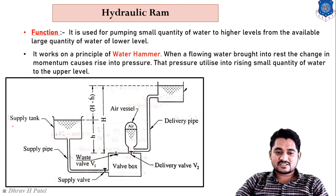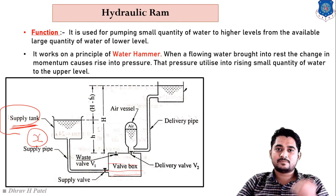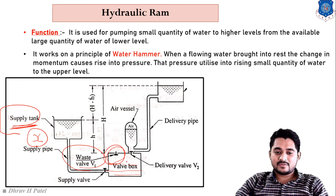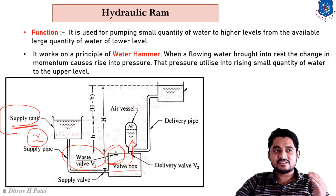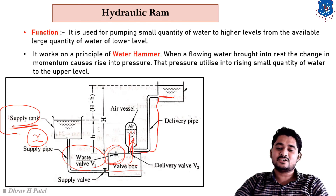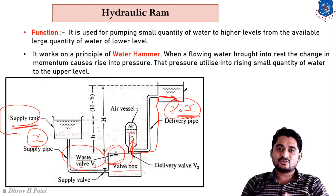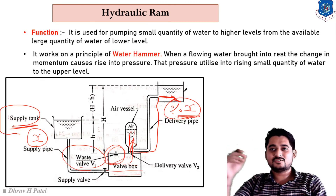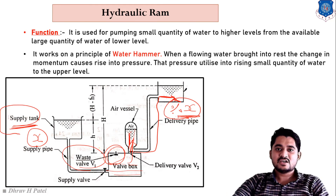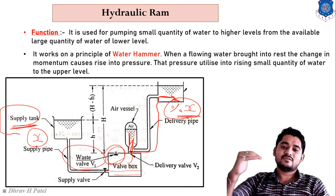To summarize, if we supply X amount of fluid from the supply tank, that fluid is impacted in the valve box and its momentum is converted into pressure. The waste valve closes, water fills the air vessel, and with the compressed air the pressure is applied to push some amount of water up the delivery pipe. So from the hydraulic ram, we can get a percentage of the original X amount of water elevated to a higher level — using the hydraulic ram principle.